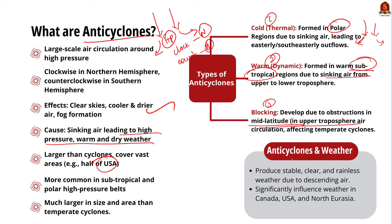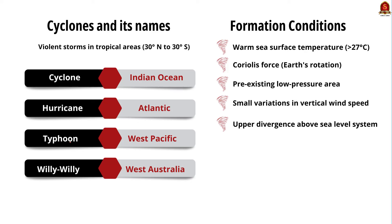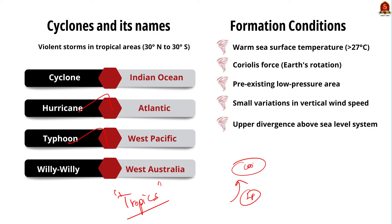Cyclones, also known as hurricanes or typhoons in different regions, are intense low-pressure areas with violent storms that originate over warm ocean waters primarily between the tropics. Warm ocean water heats the air above it, causing it to rise; this rising moist air cools and condenses, forming clouds and releasing heat, which causes more rain. The rising air creates low pressure at the surface, pulling in more air from the surroundings, which starts spinning due to Earth's Coriolis effect, strengthening the cyclone. Conditions needed for cyclone development include sea surface temperature above 27°C, presence of Coriolis force, minimal changes in wind speed at different altitudes, an existing low-pressure area, and divergence in the upper atmosphere to pull air upwards.